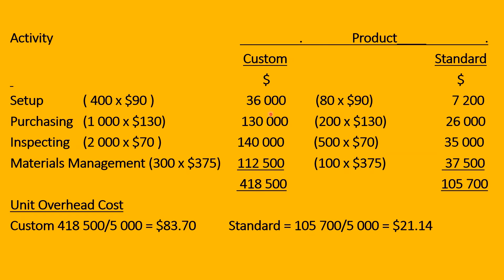The same applies for inspecting and materials management — the total is split between the two products and we multiply by the rate we calculated. So 400 by 90 gives us $36,000, and 80 by 90 gives us $7,200. When we add these back together we should get the same as the total overhead for that activity — $43,200 — as a check. For purchasing, multiply by 130: we get $130,000 and $26,000. Then we add down to get the total overhead for each product.